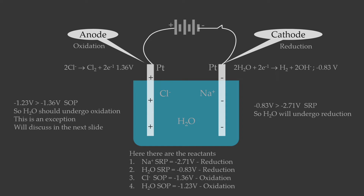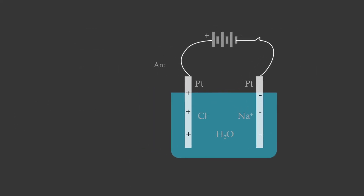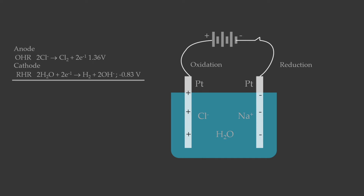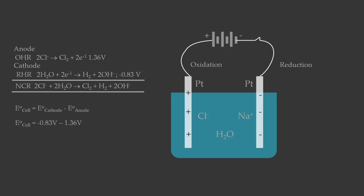Next we calculate the E°cell, the standard cell potential. The anode undergoes oxidation and the cathode undergoes reduction. Adding the two half-reactions gives the net cell reaction: 2Cl⁻ + 2H₂O → Cl₂ + H₂ + 2OH⁻. Using the equation E°cell = E°cathode − E°anode, and substituting standard reduction potential values: E°cell = −0.83 V − 1.36 V = −2.19 V.